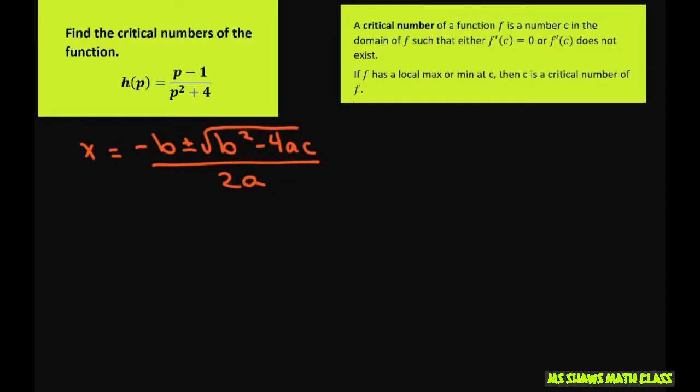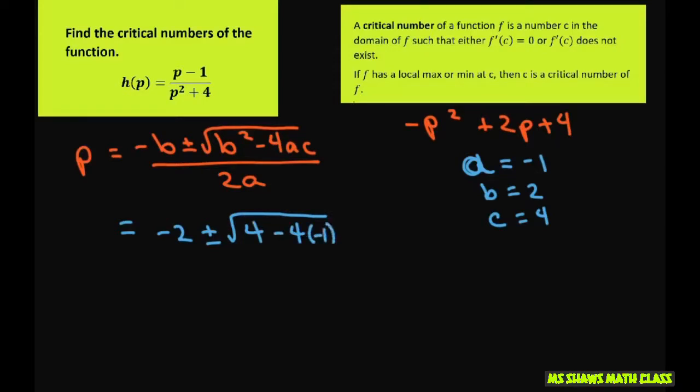And our numerator was negative p squared plus 2p plus 4. So we're going to change this to p, and now our a equals negative 1, our b equals 2, and our c equals 4. So we're going to get this equals negative 2 plus or minus negative 2 squared is 4 minus 4ac divided by negative 2.